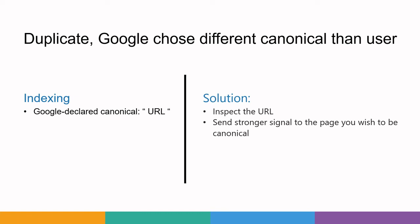The second issue is 'duplicate Google choose different canonical than user.' In this case, the user has declared a canonical URL but Google has chosen some other URL as the canonical. Search engines are getting wiser — they can choose which one they consider the original version. If you're okay with the URL Google chose, you can change your canonical URL to match Google's declared canonical URL.